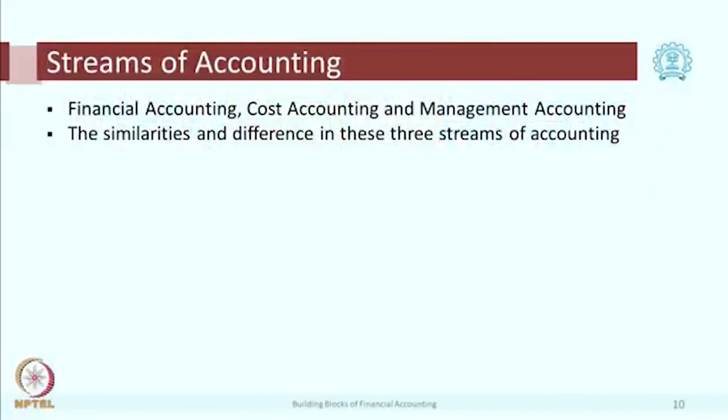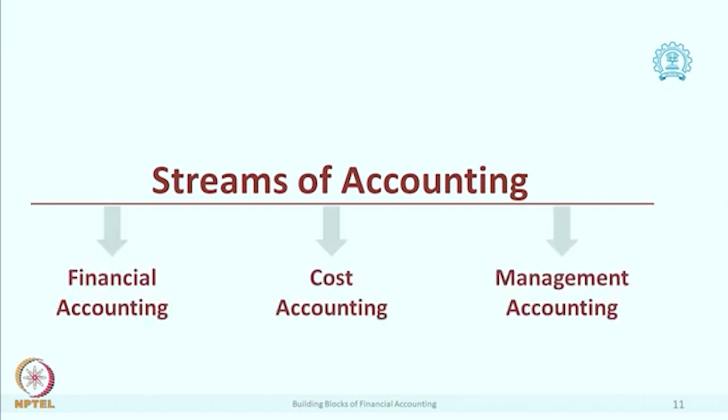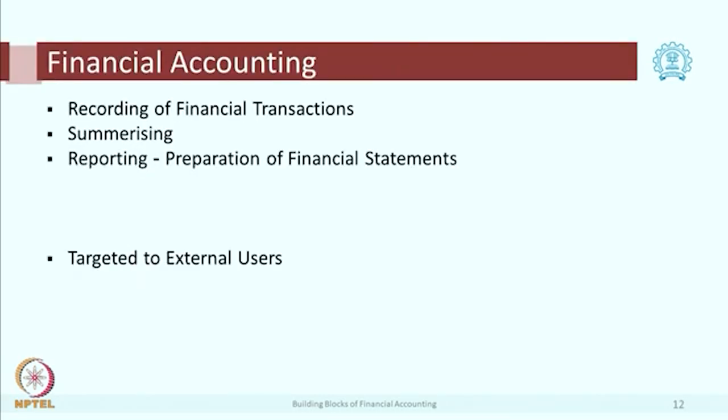There are three important streams of accounting. The first is financial accounting, then there is cost accounting, and there is management accounting. This particular course is on financial accounting. Financial accounting deals with recording of financial transactions — that is the first step. The next step is summarizing the transactions, and the third step is reporting of the financial position, usually by preparing financial statements.